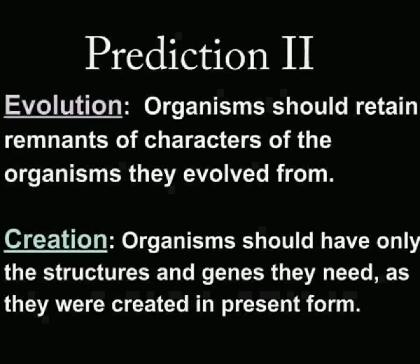Moving on to the second test: if evolution were true, we would predict that certain organisms would have vestiges — be it in the form of DNA or physical remnants left over from previous organisms. Take, for example, the genes for making teeth. Chickens don't have teeth. If they were designed in present form according to creationism, chickens should not have the genes for making teeth — they were never a reptile, they never made teeth, they simply should not have them. However, if evolution is true, it's possible that chickens would have genes for making teeth that simply got inactivated and are no longer used.